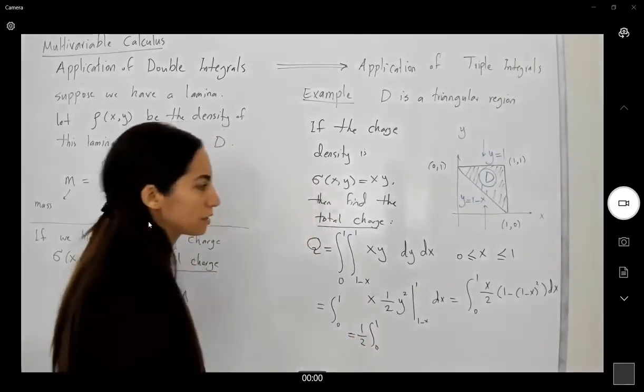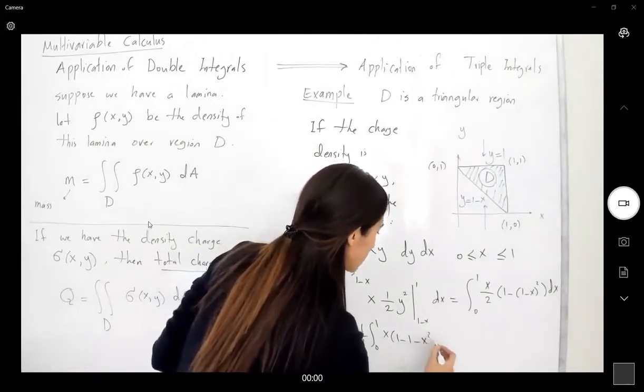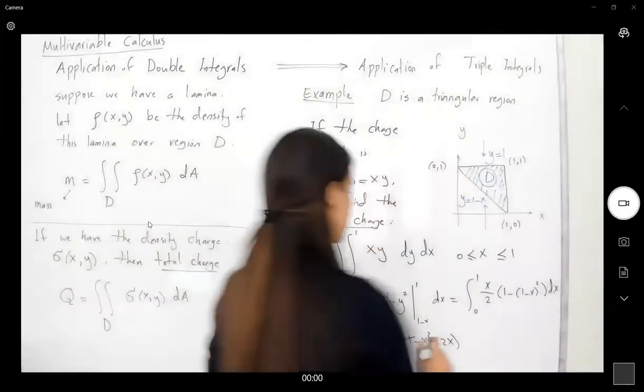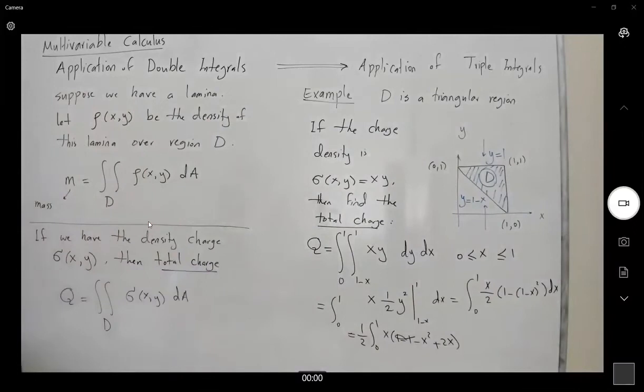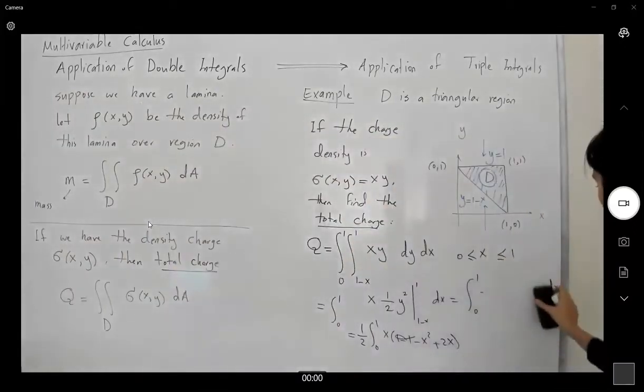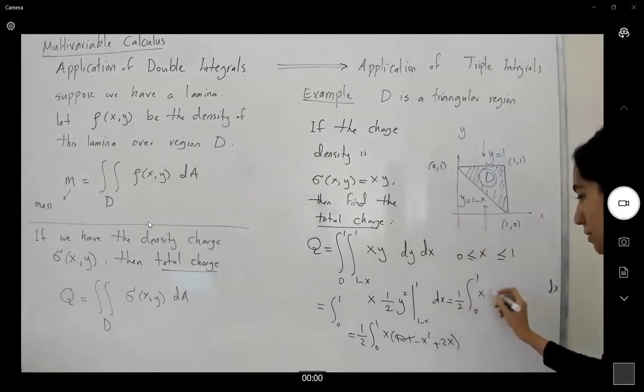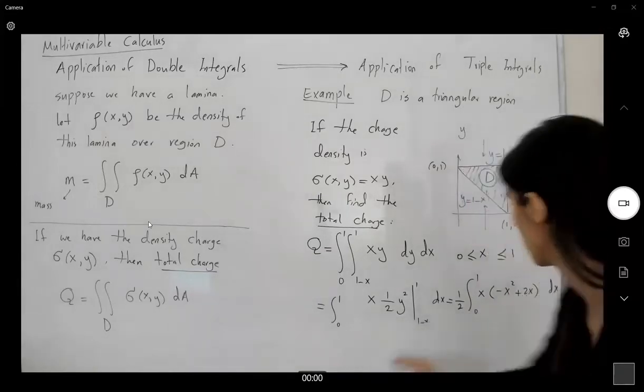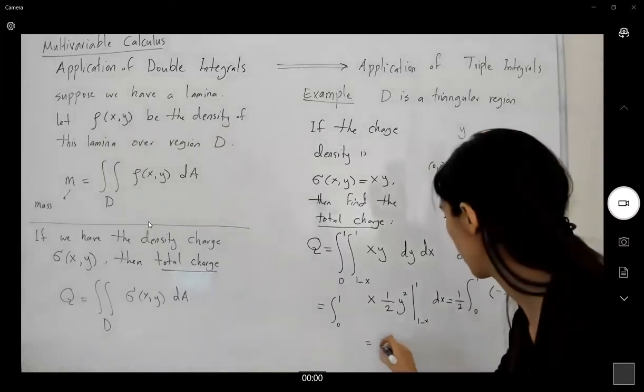So I have outside integral a constant, a half. You have x [1 minus (1 minus x squared) + 2x]. So we can cancel out 1 and 1. So I have a half times x times (negative x squared plus 2x). We can distribute x into parentheses to get negative x cubed plus 2x squared.